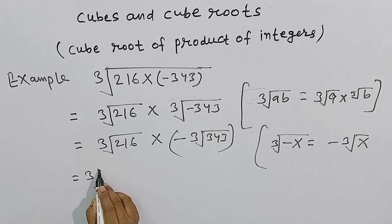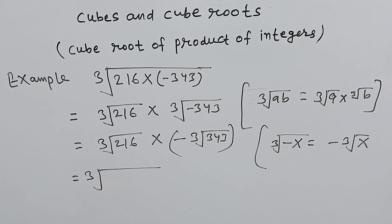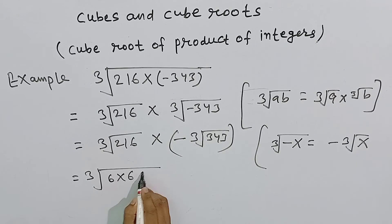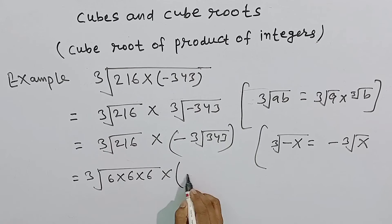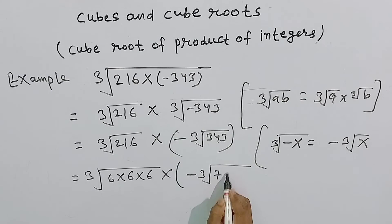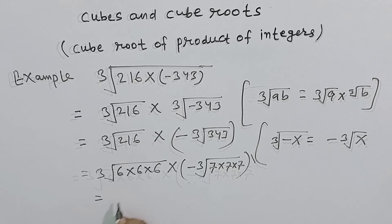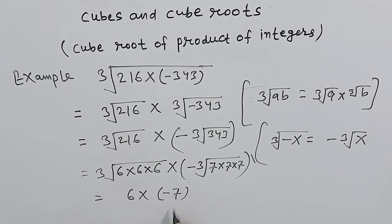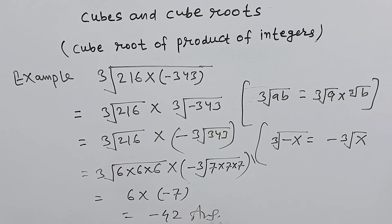Is equal to cube root of 216 into minus cube root of 343. 216 जो है वो 6 का cube है, so 6 into 6 into 6, और 343 जो है वो 7 का cube है, यानि 7 into 7 into 7. तो value is equal to 6 into minus 7, is equal to minus 42 — यह हमारा answer हुआ।